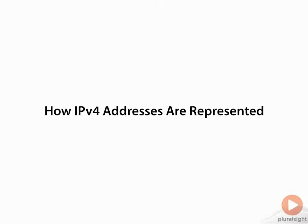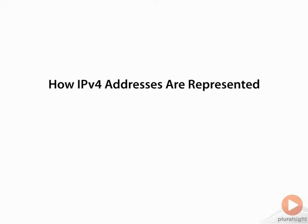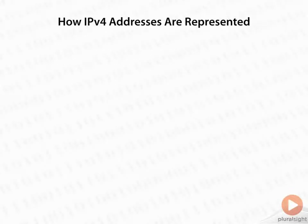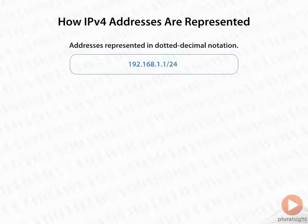The next topic we want to discuss is how IPv4 addresses are represented. IPv4 addresses are represented in dotted decimal notation, as we mentioned in the previous section. Here's an example of a dotted decimal address: 192.168.1.1.